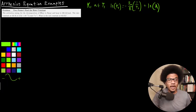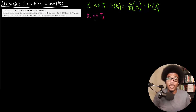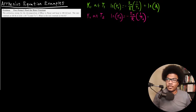We can also write a second expression for rate constant K2 at temperature T2: ln K2 = negative Ea over R times 1 over T2, plus ln A. Note that the activation energy does not change between the two conditions, and the frequency factor A also does not change.